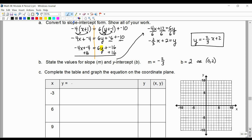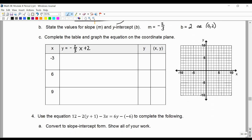Next, we are going to use this to fill out our table. We have negative 2/3x plus 2. We might even start our ordered pairs, which is this one is going to be negative 3 comma something, 6 comma something, and 9 comma something.